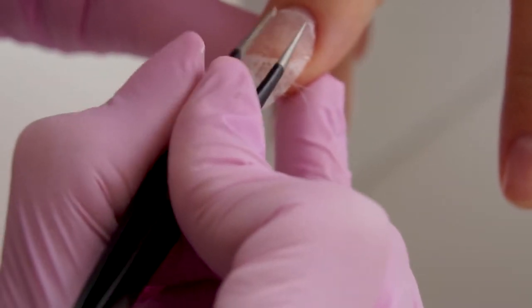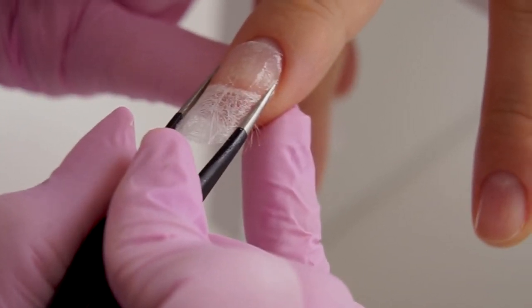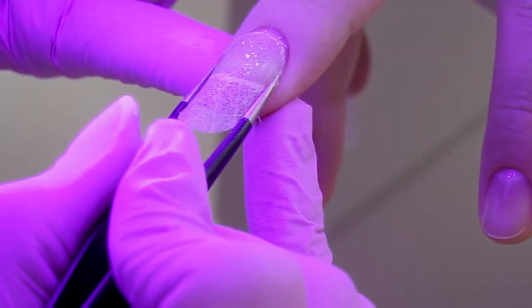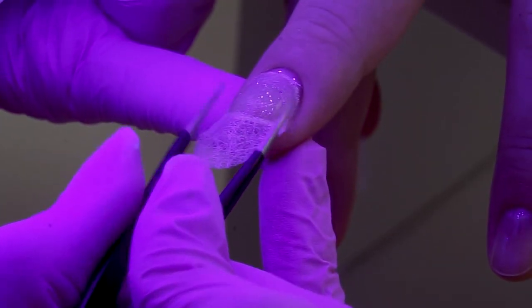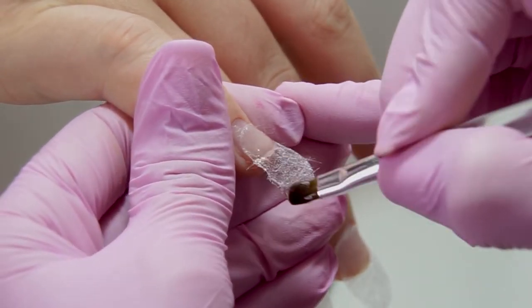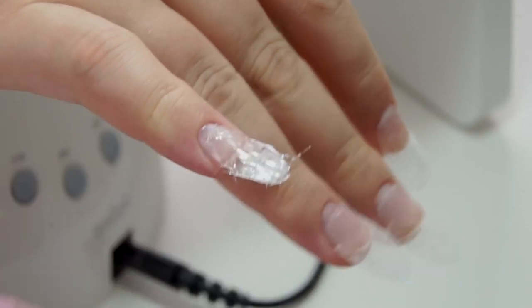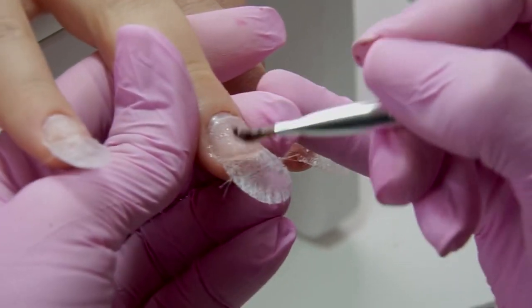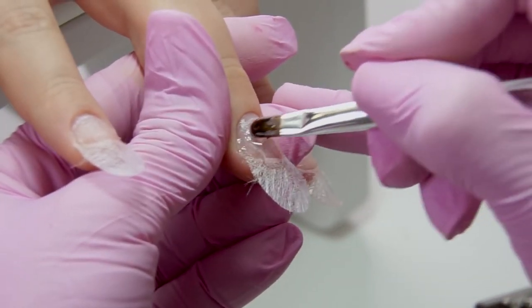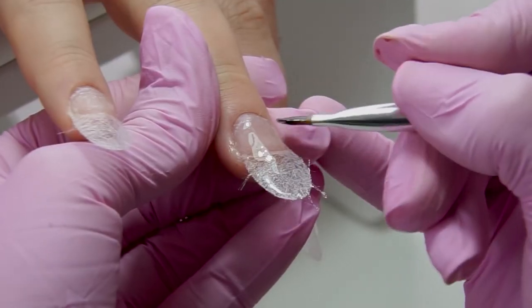This attachment method is not that comfortable. Now I've realized the advantage of regular fiberglass, because regular fibers don't clutter as much as this template fibers. Well, let's see what we can do about it. I'm soaking the free edge with a transparent gel.